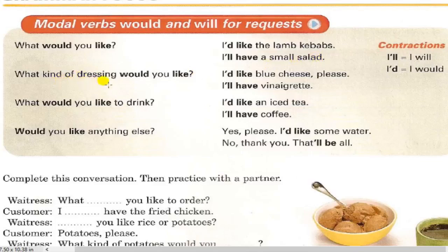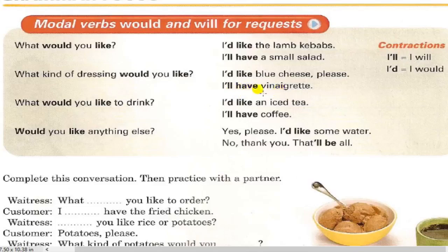What kind of dressing would you like? I'd like blue cheese, please. I'll have vinaigrette. Vinaigrette is made from vinegar and lemon juice. What would you like to drink? 'Would you like to' is followed by the main verb in the infinitive. I'd like a nice tea. I'll have coffee.